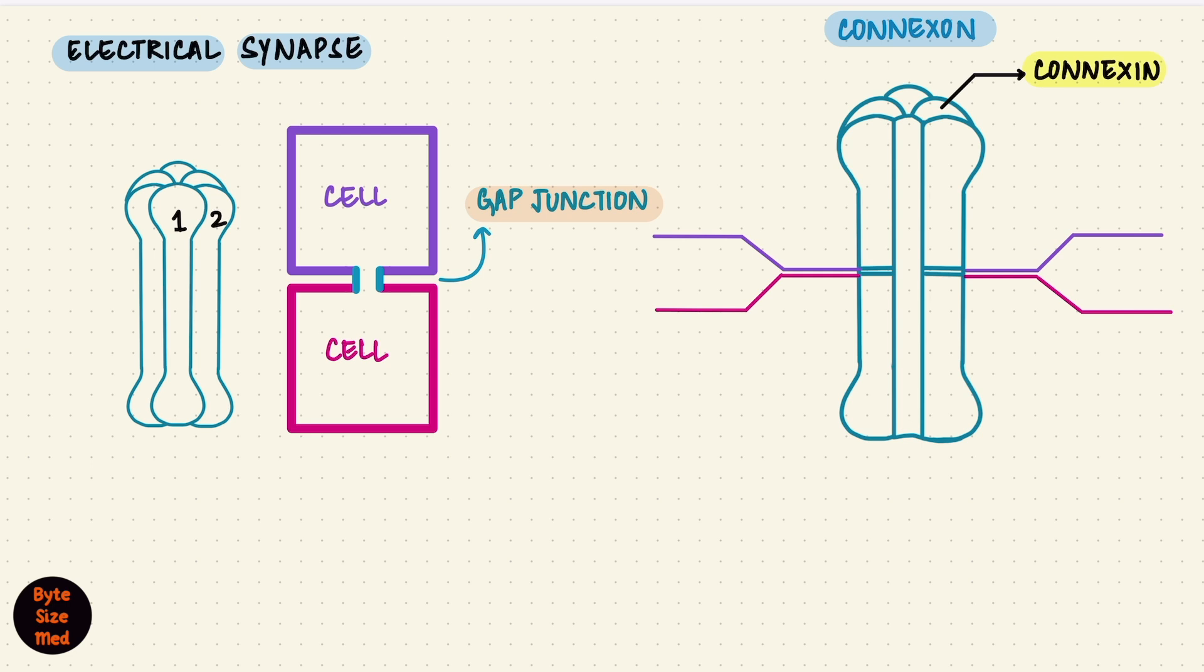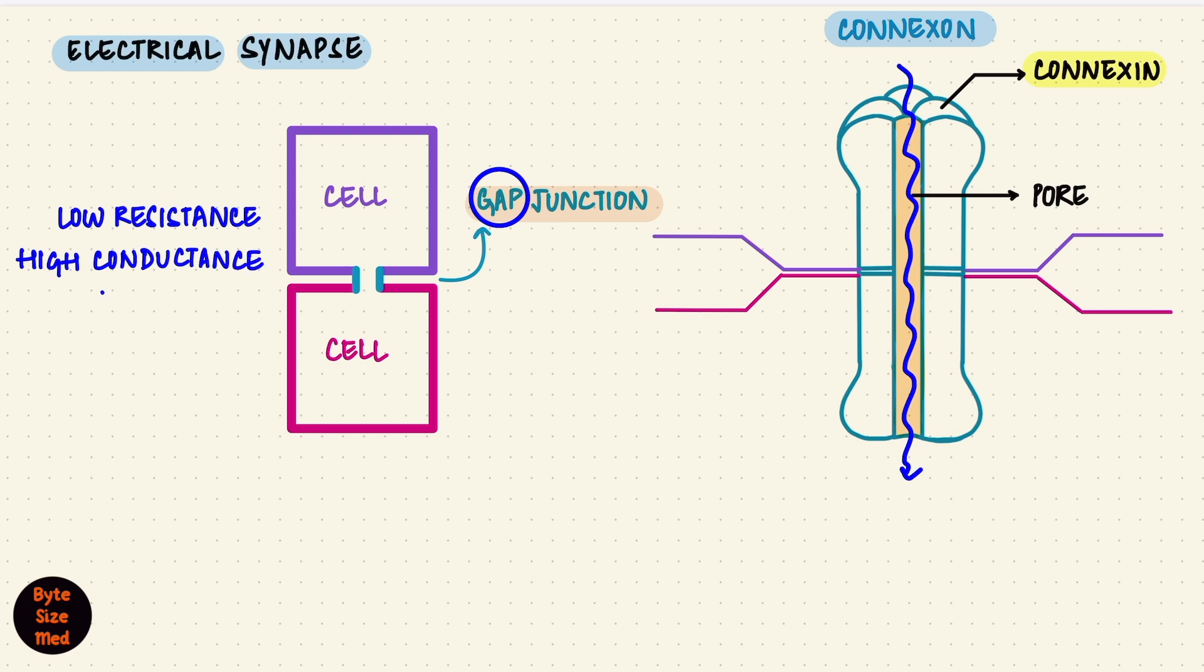Each connexon is a hexamer of connexins, so they have six of these units forming a pore in the center. This pore is how the two cells can communicate. It's the gap and the junction. They form a low-resistance, high-conductance bridge between the cells, so that electrical signals can move from one cell to the next in the form of ion currents.